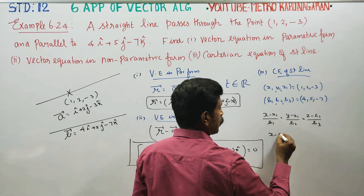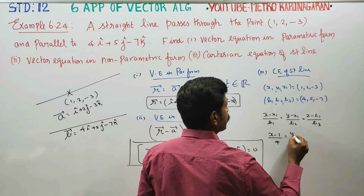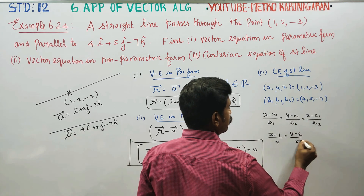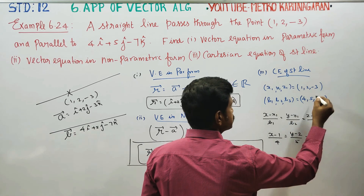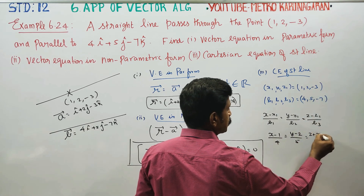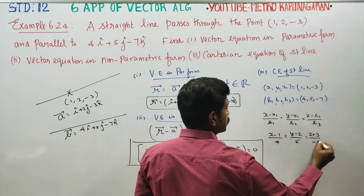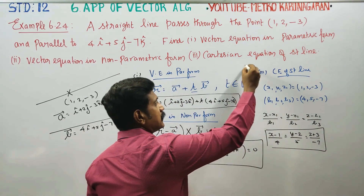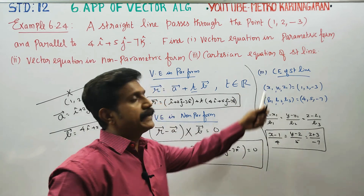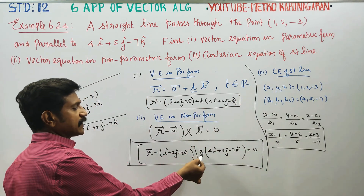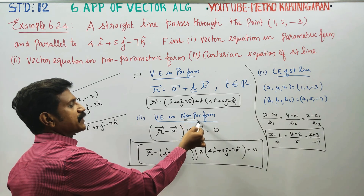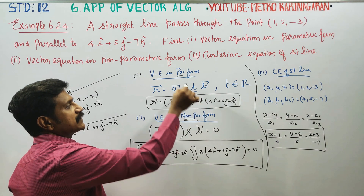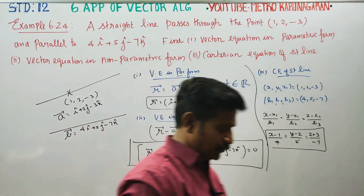Substituting the values: x₁ = 1, y₁ = 2, z₁ = -3, and b₁ = 4, b₂ = 5, b₃ = -7. So the Cartesian equation is: (x - 1)/4 = (y - 2)/5 = (z + 3)/(-7). This completes all three forms. Thank you.